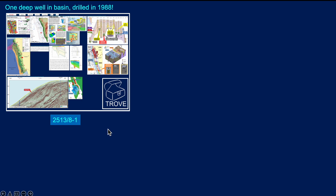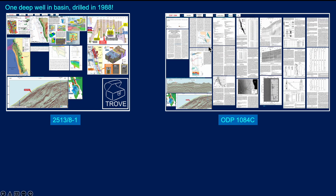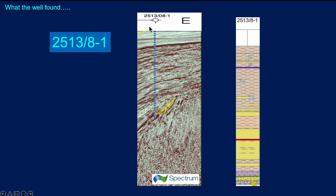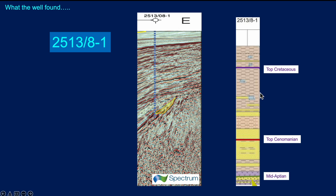Here's the one well we've talked about, the 2513-81. This is the entry from Trove showing all the information on that particular well. Here's the ODP well shown in the basin — we've got lots of information on that. But this seismic line shows that the ODP well didn't penetrate very far into the sediment pile; it TD'd in the early Pliocene. This is the deep well projected onto this seismic line. You can see an interesting geometry that looks like something absolutely pinching out, a significant distance up-dip of the well that was drilled. We can see here the top Cretaceous, top Cenomanian, and mid-Aptian reflectors that have been mapped.